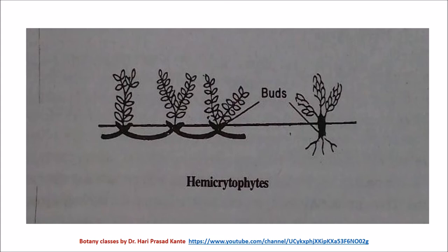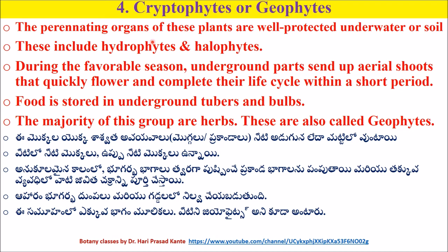The fourth type is cryptophytes, also called geophytes. The perennating organs like buds of these plants are well protected under water or soil. These include hydrophytes and halophytes. During the favorable season, underground parts send up an aerial shoot that quickly flowers and completes its life cycle within a short period. Food is stored in underground tubers and bulbs.